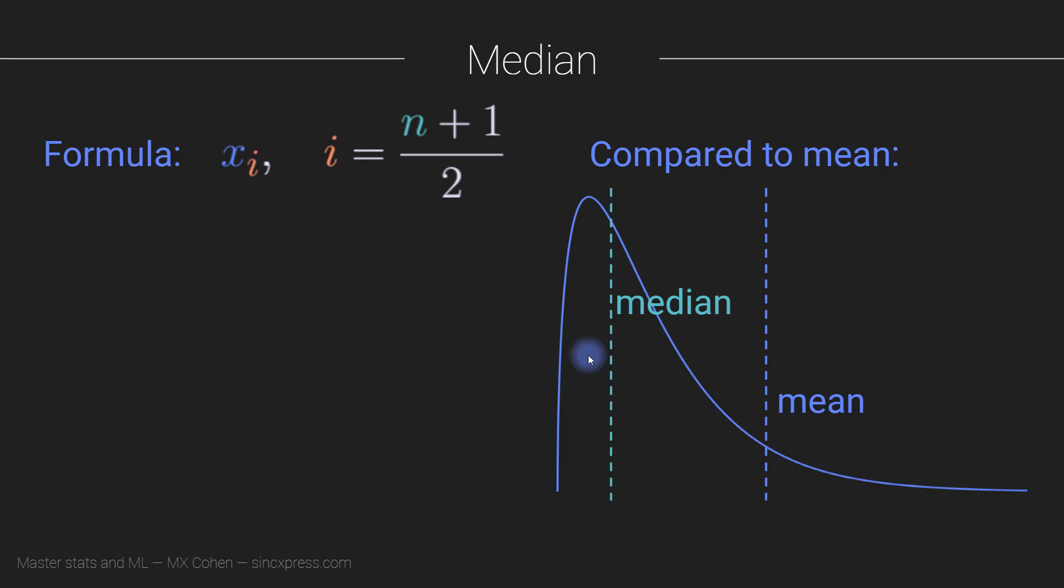So in this case, if you have a distribution like this, the mean is not very informative about the central tendency. The median is going to be much closer to the actual peak of this distribution. So if you have a distribution that is asymmetric, it's likely that the median is going to be a better measure than the mean.